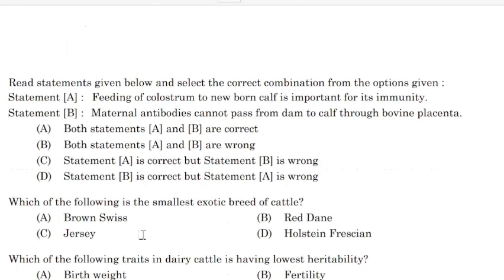Select the correct combination from the options given. Correct answer: Option A — A and B are correct. Which of the following is the smallest exotic breed of cattle?